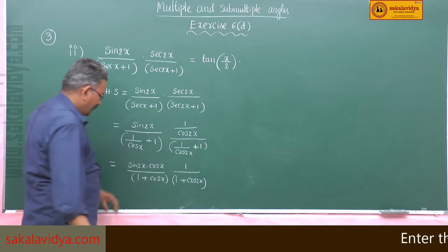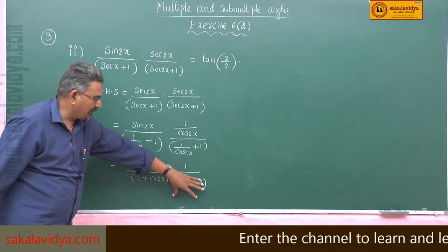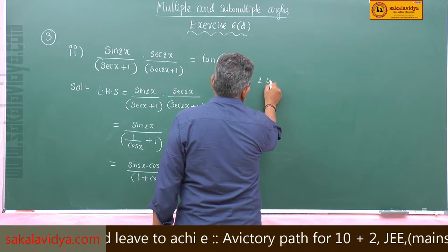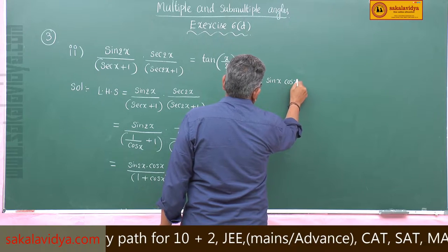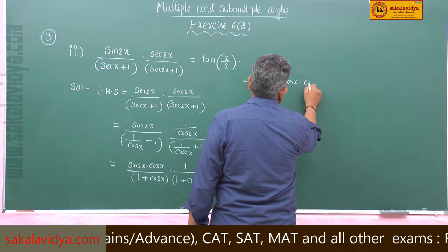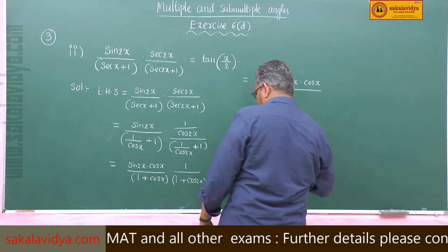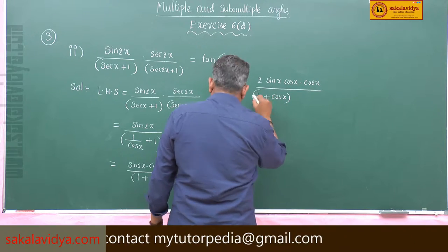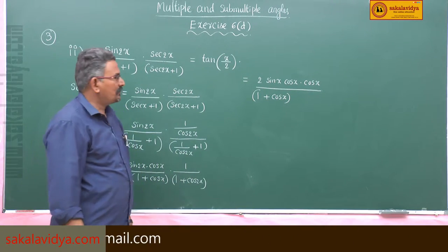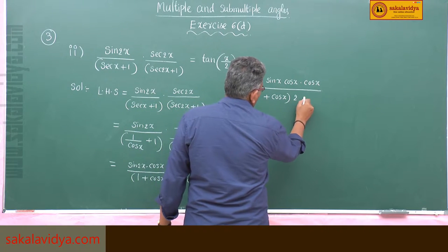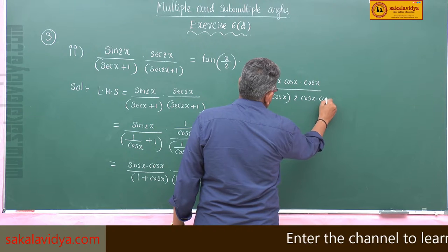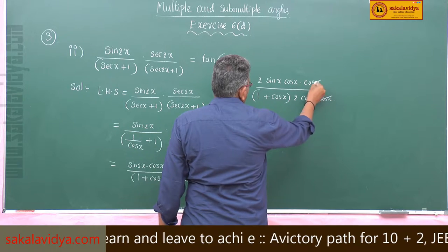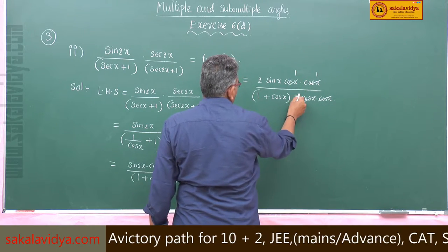Now let us change sin2x and 1 + cos2x using identities. sin2x is 2·sinx·cosx, and 1 + cos2x equals 2cos²x, which we can write as 2·cosx·cosx. So we have 2·sinx·cosx multiplied by cosx in the numerator, and 2·cosx·cosx in the denominator.